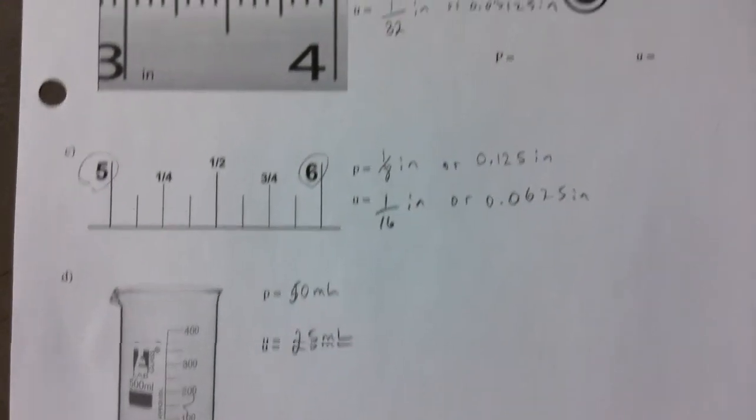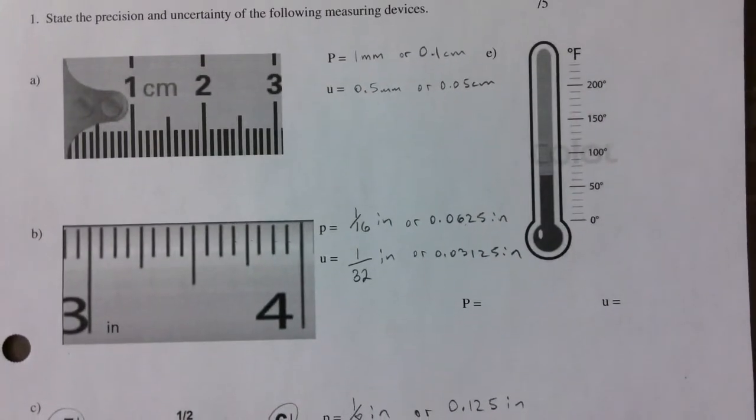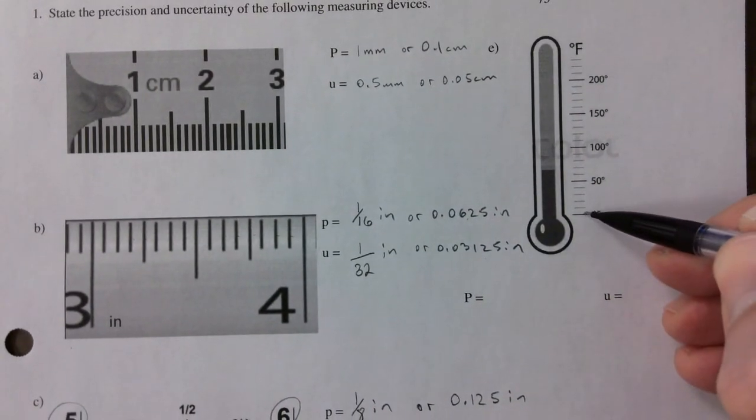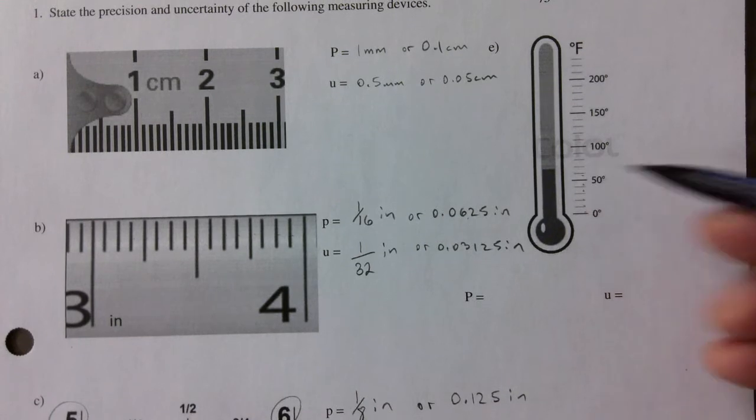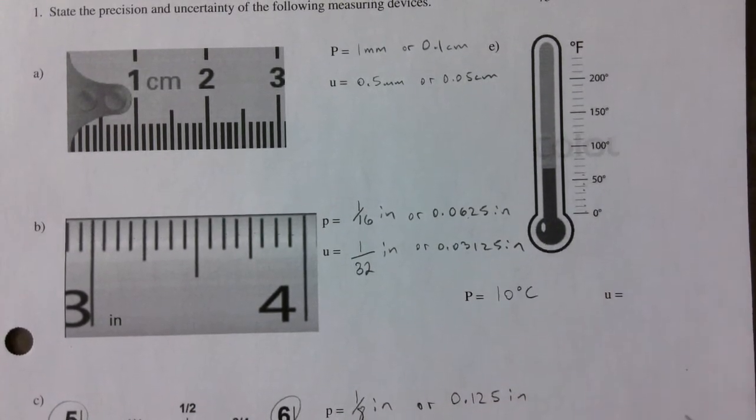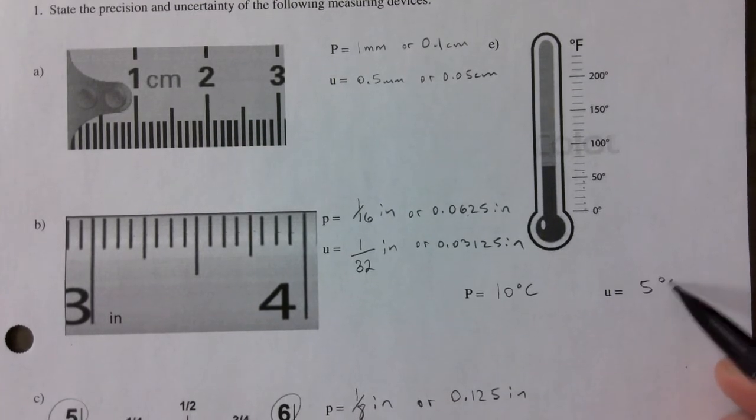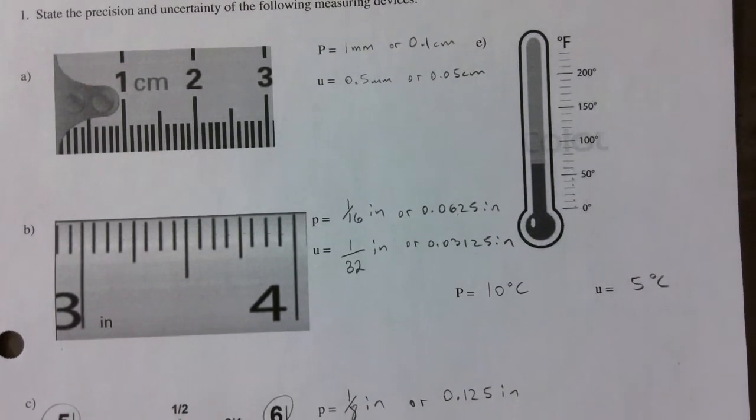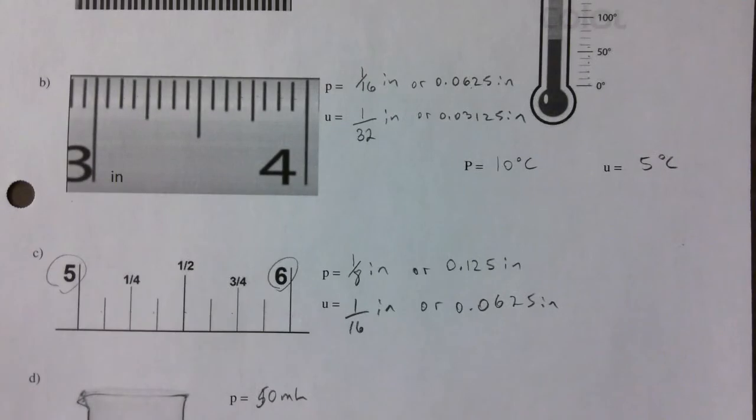Next, the thermometer. Let me see: 1, 2, 3, 4, 5—it's ten. It's going up by ten degrees at a time, which means that it's five degrees Celsius is my uncertainty.